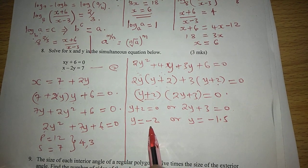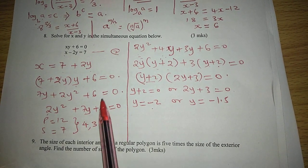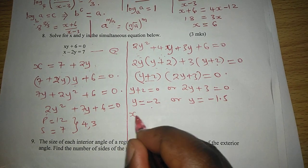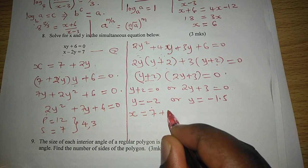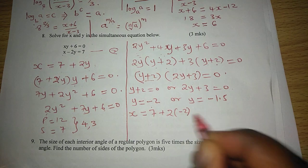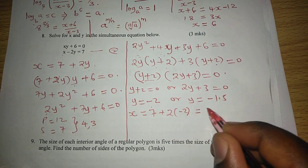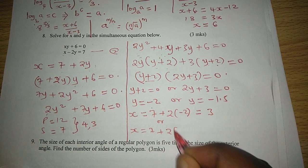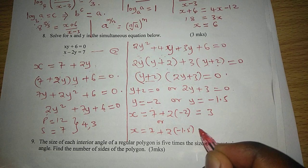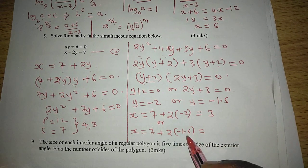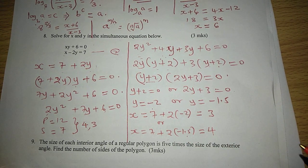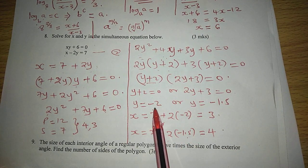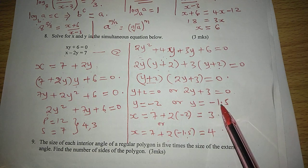Now with the two roots of y, we can substitute in this equation and get two roots of x, such that x is 7 plus 2 into negative 2, and this gives us 7 minus 4 which is 3, or x equals 7 plus 2 into negative 1.5, making this one 3 negative, such that x becomes 4. So x is either 3 or 4, and y is either negative 2 or negative 1.5.